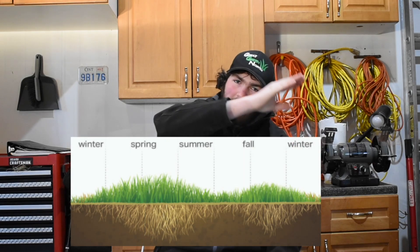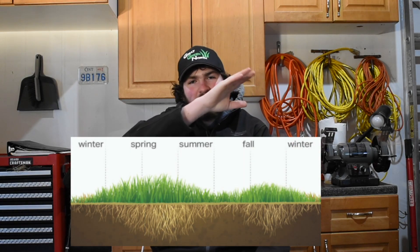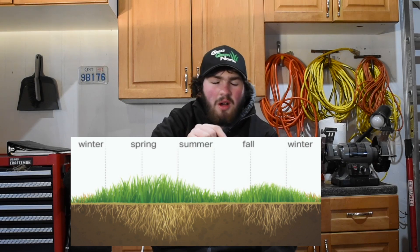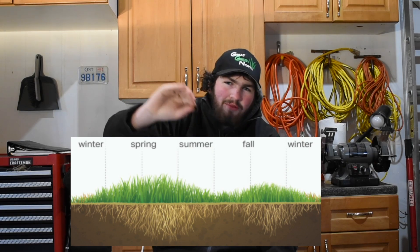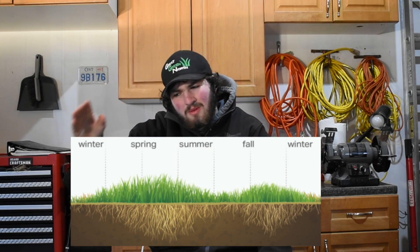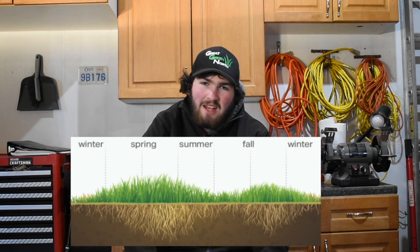That is the lawn care growth pattern. We start in spring with a big hump — we call that our spring burst — then we head into our summer decline, reaching that rock bottom point, heading into fall with a big arc, and then as temperatures cool off, we cool right off into fall. That's our growth pattern up here in the north, the Great Green North.